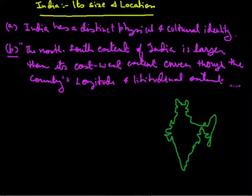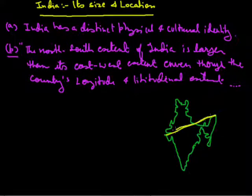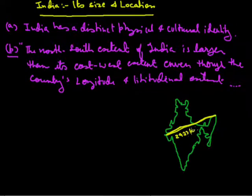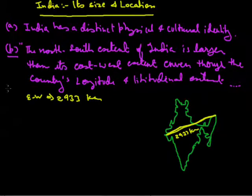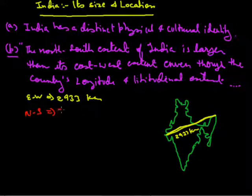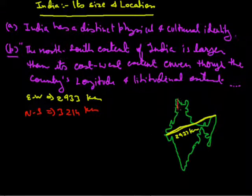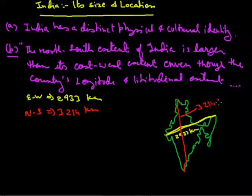The east-west extent of India is 2,933 kilometres, meaning India is 2,933 kilometres from east to west. The next is north to south — India is 3,214 kilometres from north to south.